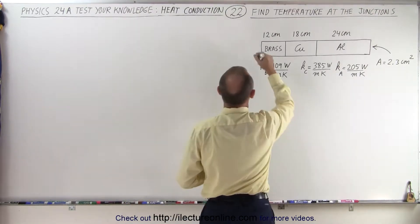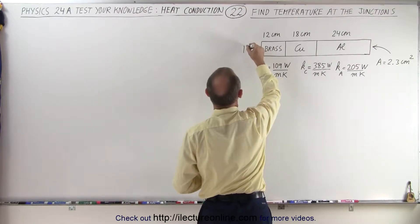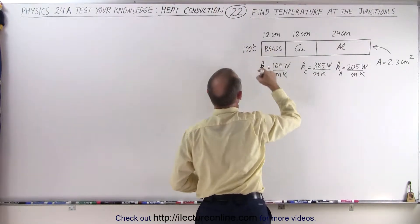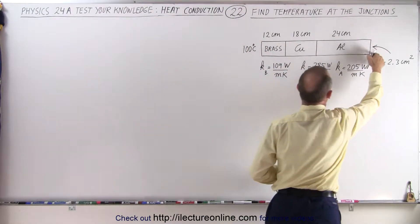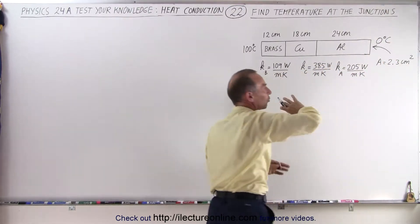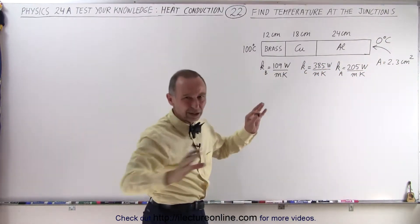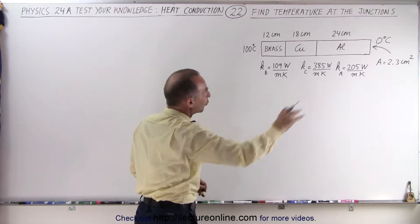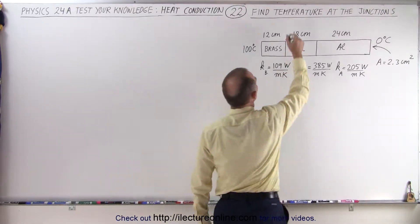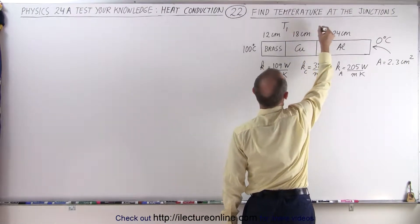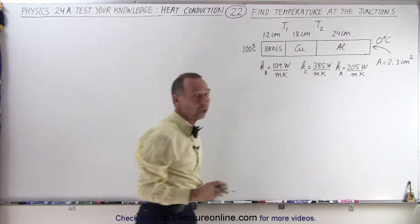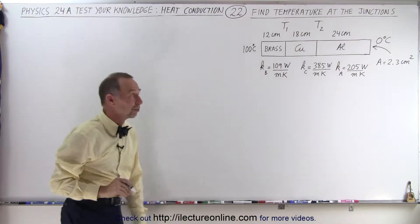The temperature on one side is 100 degrees centigrade, and the temperature on the other side is zero degrees centigrade. Let's assume there's no heat loss to the sides — heat flows through the three bars, and we're trying to find the temperature at junction one and the temperature at junction two. That's what we're after.